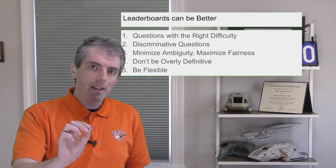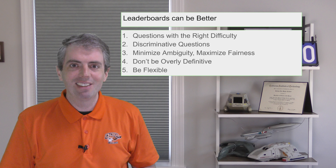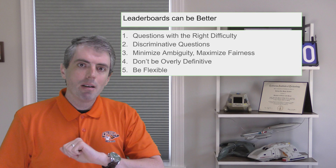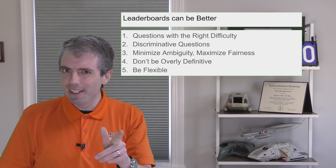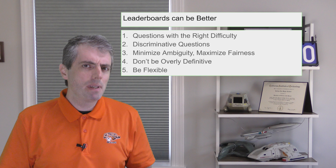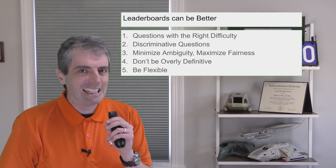The five ways are: one, have the right difficulty questions; two, have the questions be as discriminative as possible; three, minimize ambiguity and emphasize fairness; four, don't be overly confident about making decisions about who the winner is; and five, be flexible. We'll go through all of these, but first we need to review in a little bit more detail about what a leaderboard is.